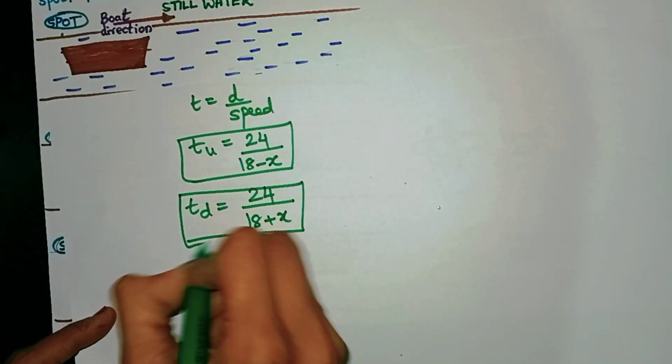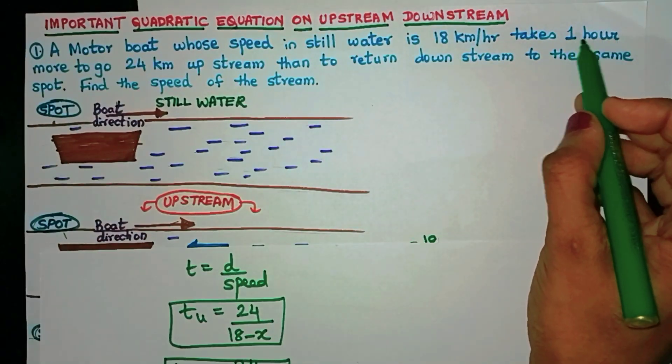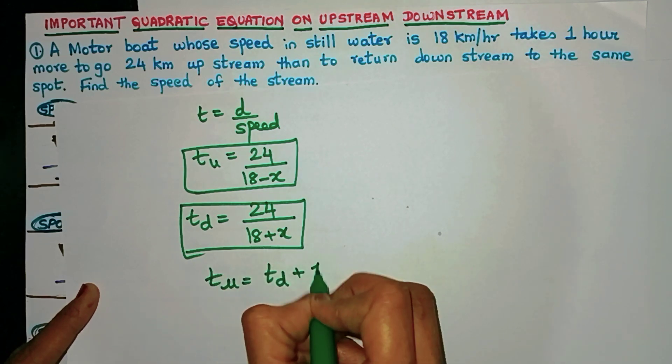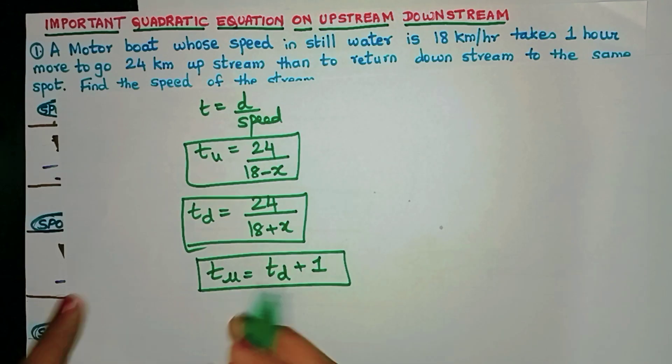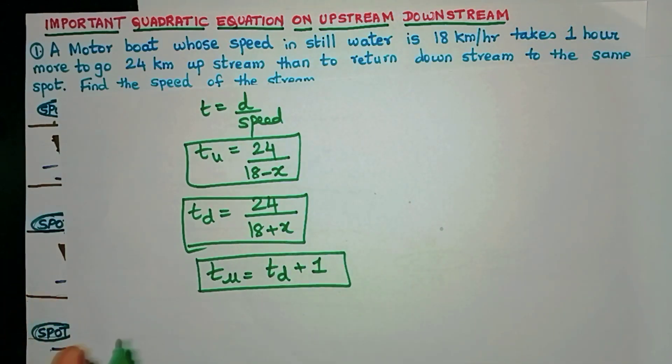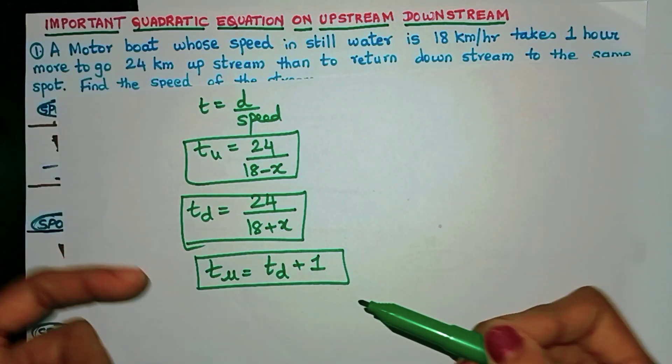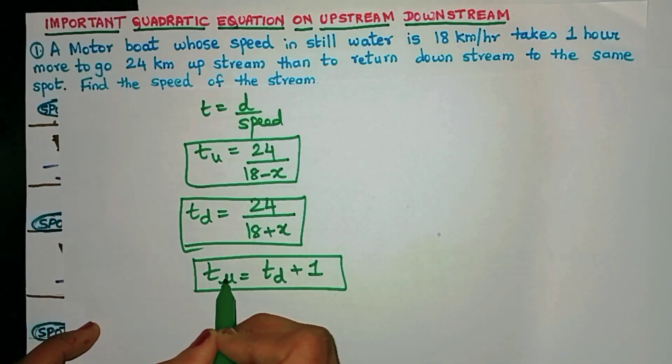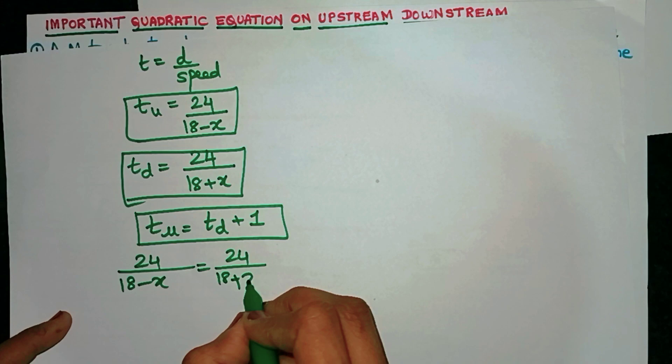I hope you understood till here. Let's read the question again. They are saying that the upstream time is one hour more than the downstream time. Did you observe how we have now converted the English statement into a mathematical statement? This is the most important part of the question. Make sure you understand how we do this. Now all we have to do is substitute the values: 24/(18-x) = 24/(18+x) + 1.